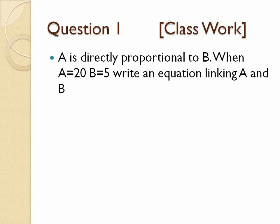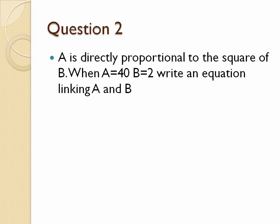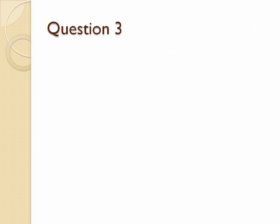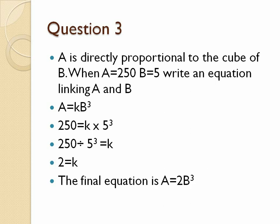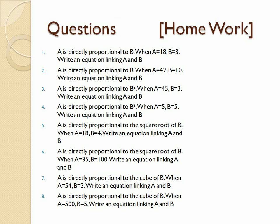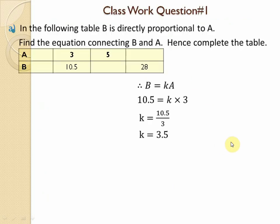This is question number one of the class work, and question number three. We calculate the connecting equation. If a is directly proportional to b, a is 18, and b is given — the initial two values are used to calculate the value of k. k is the main unknown. We write the equation linking a and b, then calculate the value of a.